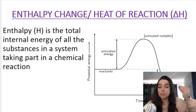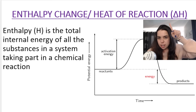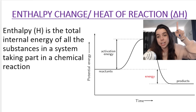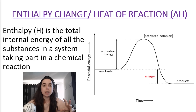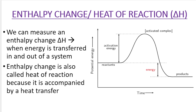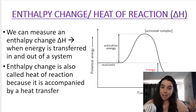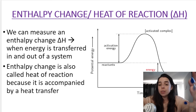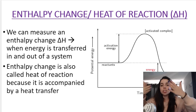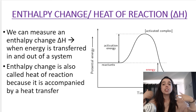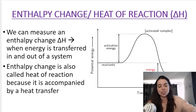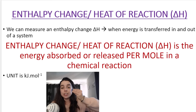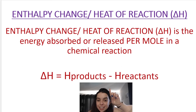Starting off with enthalpy change or heat of reaction, otherwise known as delta H. Delta is the symbol for this triangle — it means change in H, where H is enthalpy. Enthalpy is the total internal energy of all the different substances that take part in a chemical reaction. It's very difficult to measure enthalpy, but we can measure change in enthalpy. Enthalpy changes when energy is transferred out of or into a system — when energy is released or absorbed. This is often accompanied by heat transfer, which is why it's also called heat of reaction. The unit is kilojoules per mole.